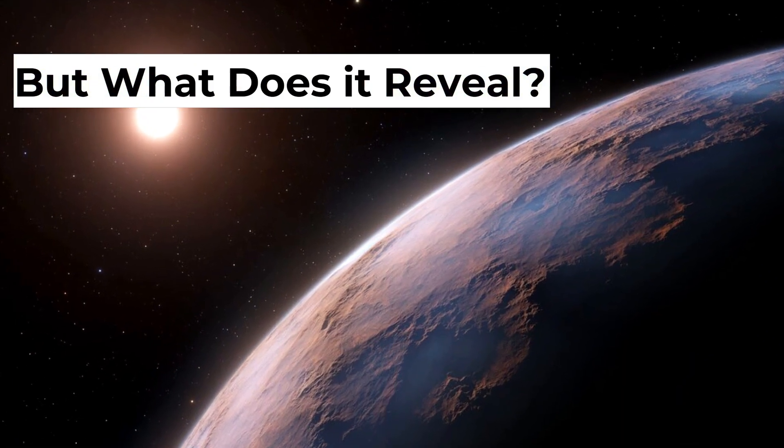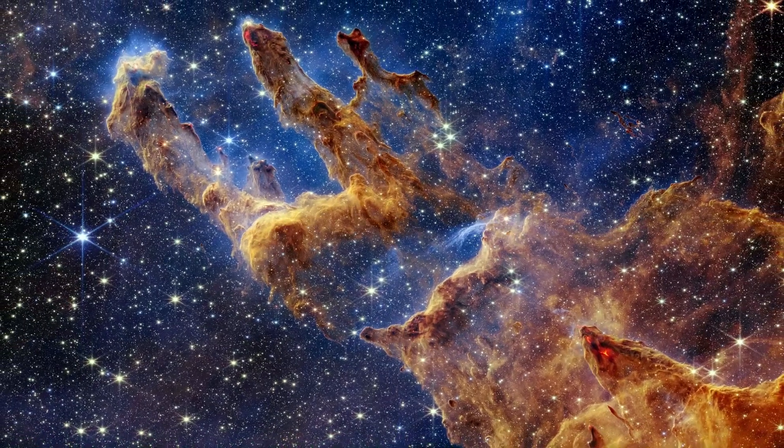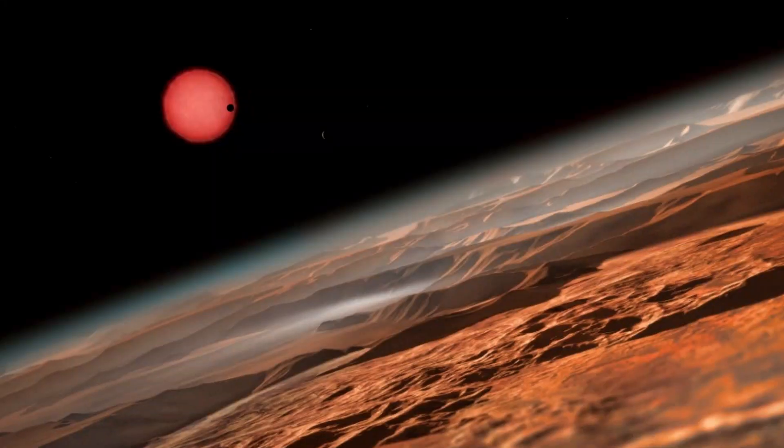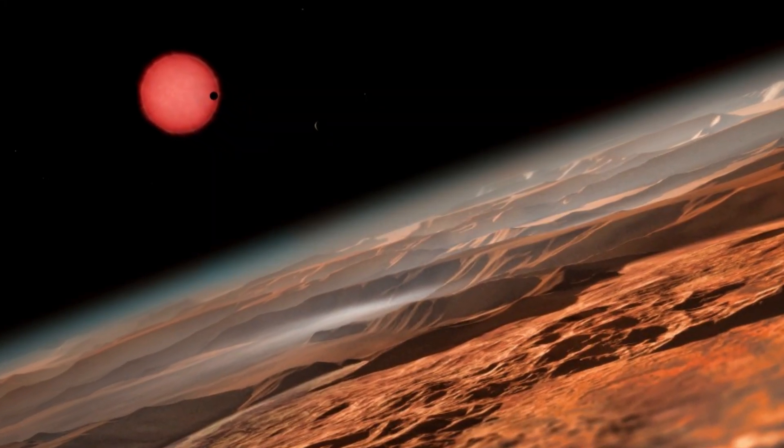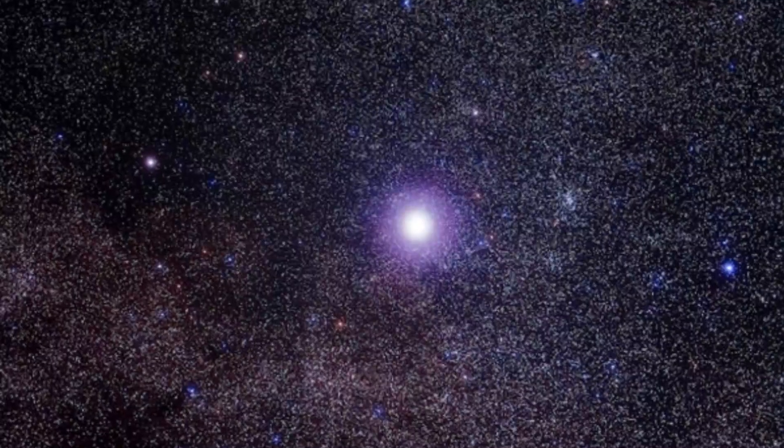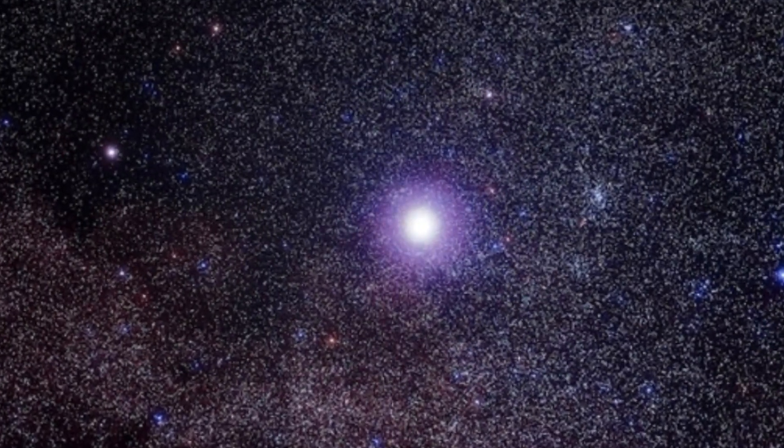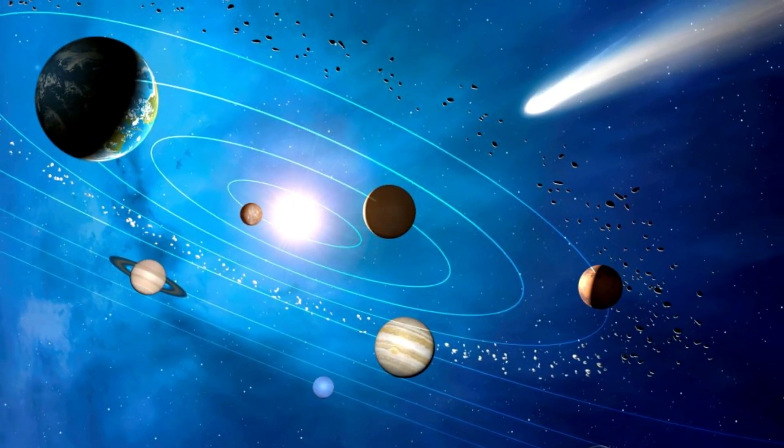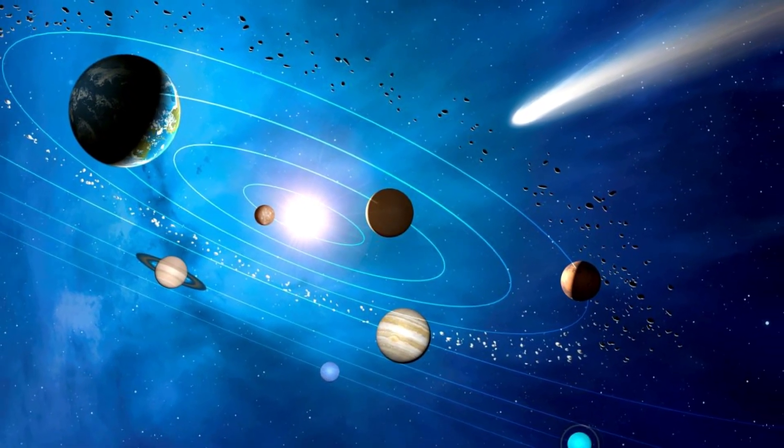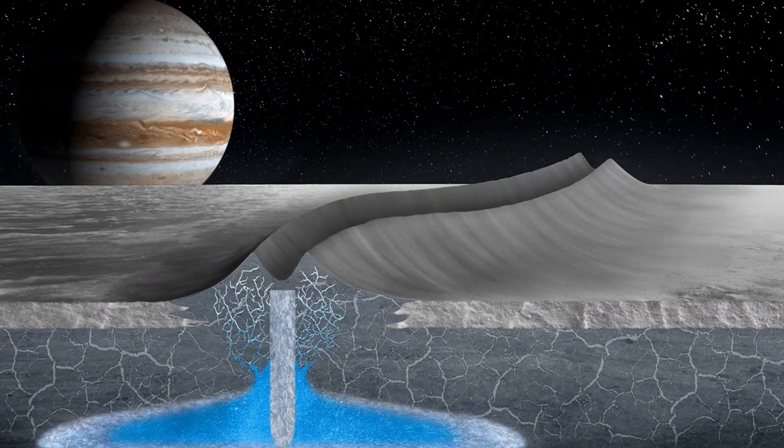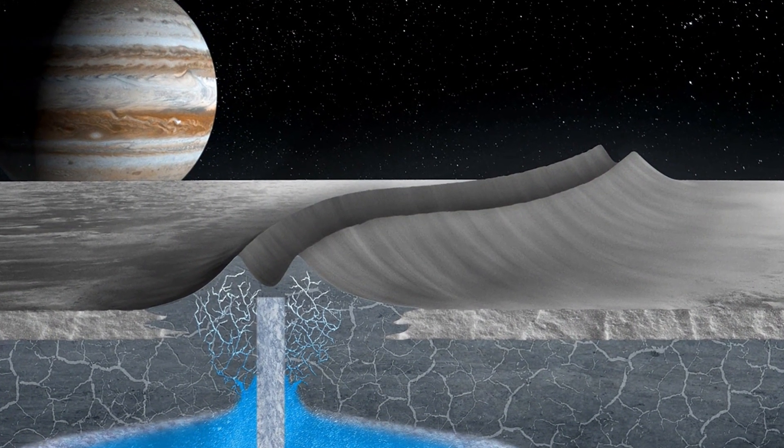But what does it reveal? Without a doubt, the image has provided us with a wealth of new discoveries about this potentially habitable exoplanet. First and foremost, the image has provided us with a much clearer view of Proxima b than ever before. This has allowed scientists to study the planet's atmosphere and composition in more detail. In fact, the image has revealed potential signs of habitability, such as the presence of water vapor and the possibility of a temperate climate.